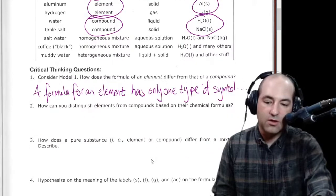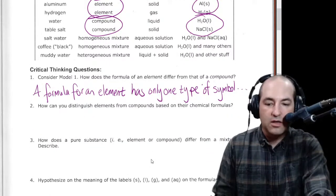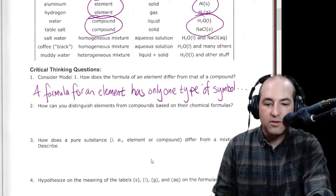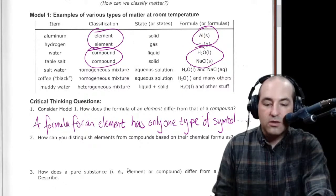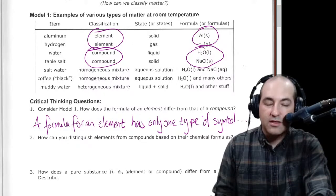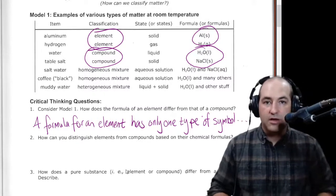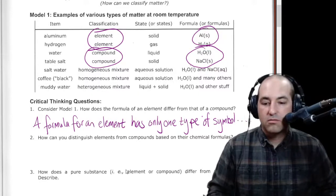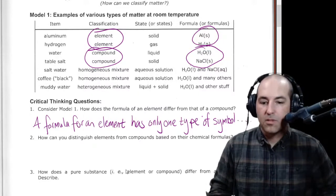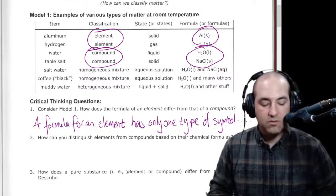And then number two is a very similar question. How can you distinguish elements from compounds based on their chemical formulas? Similar to here, now we just want to broaden it, broaden and generalize that question. So for all elements and all compounds, how might we come up with an overall rule here to distinguish those?